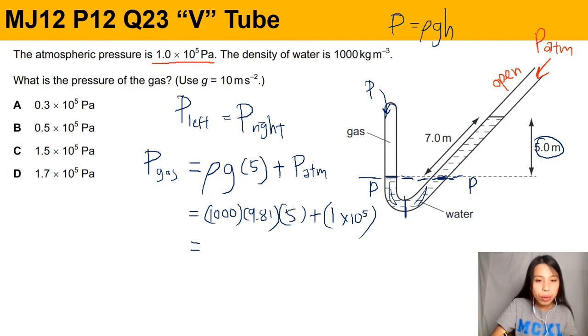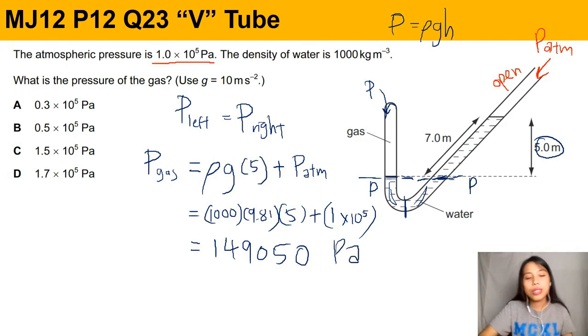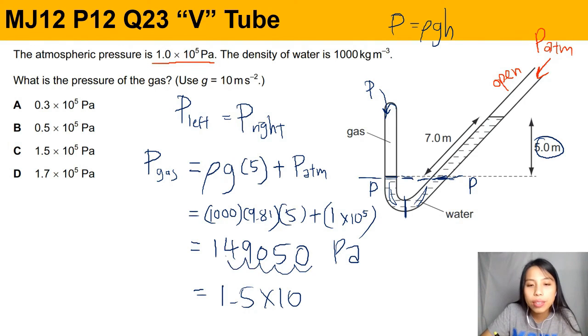You get about 149050 Pascals. The unit of this pressure is Pascal. So if we round out to the answer, it's all 2SF. So it'll be 1.5 times 10 to the 5 Pascal. So this one is the answer for this V tube.